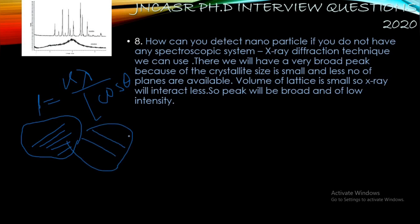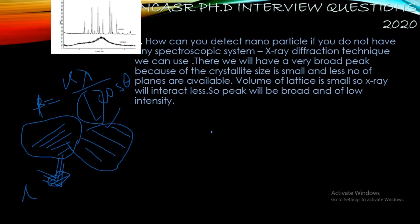A crystallite is a domain where atoms are arranged in a perfect orientation. For nanoparticles, the crystallite size L is very small, so the peak broadening β will be large. Also, fewer planes are available to interact with X-rays, so the X-rays create a diffraction pattern but the signal does not multiply. That is why the intensity will be less and the peak will be broad.